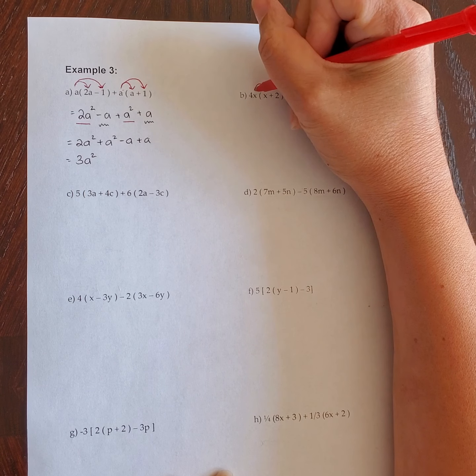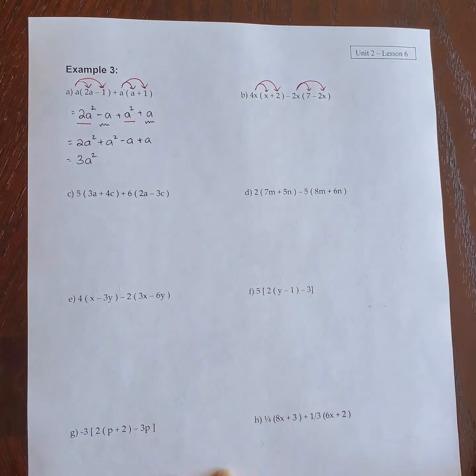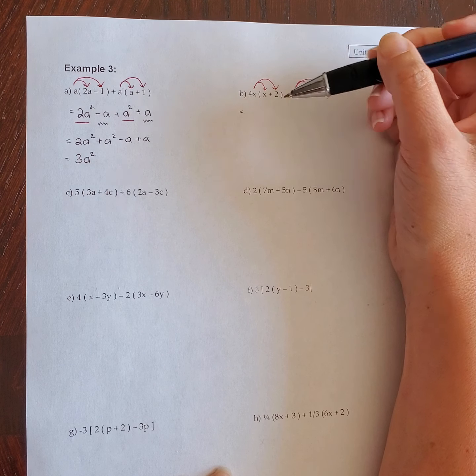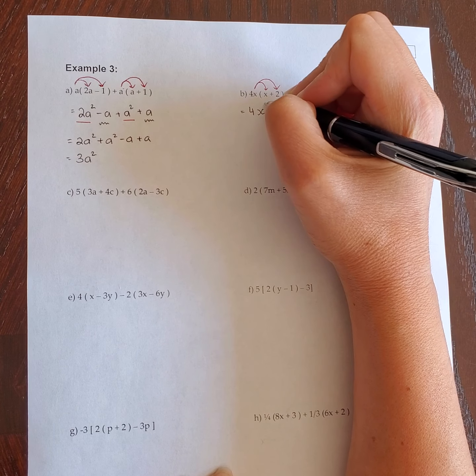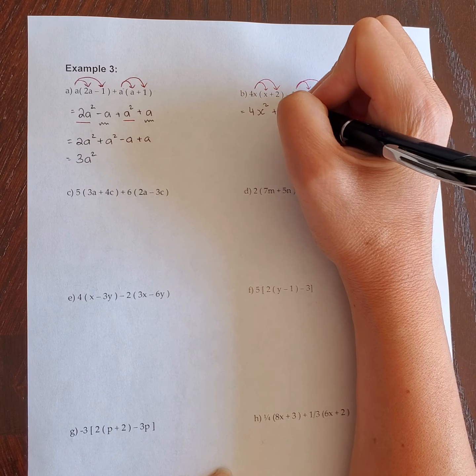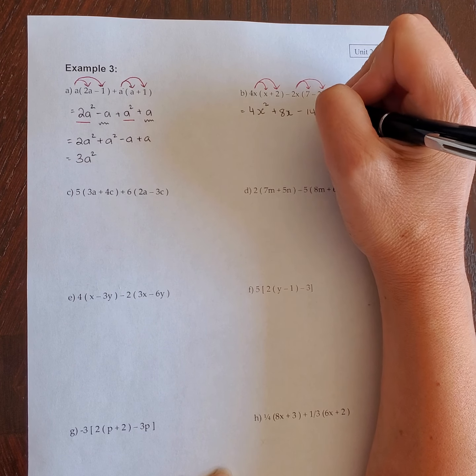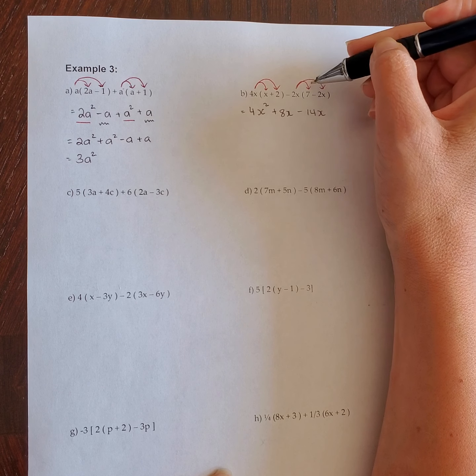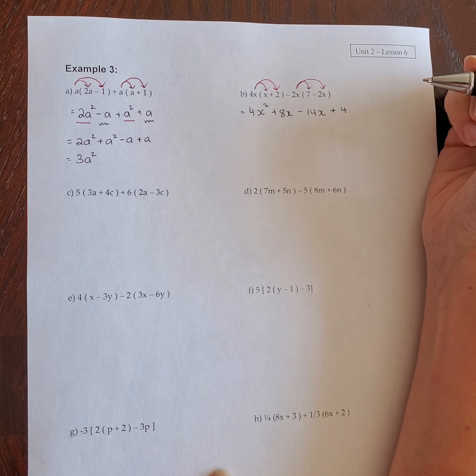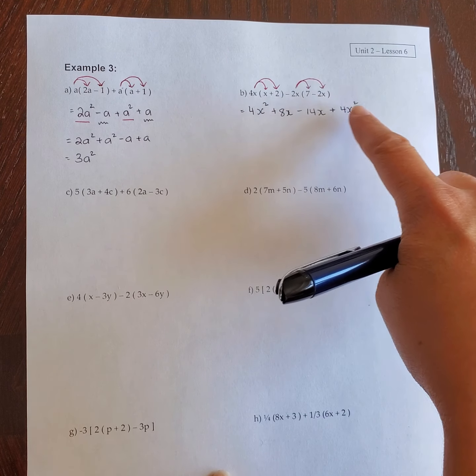Next one, I put in my arrow, so this 4x goes to the first bracket, this negative 2x goes to the second bracket. So 4x times x equals 4x squared. 4x times 2 equals 8x. Negative 2x times 7 is negative 14x, and negative 2x times negative 2x is positive 4x squared. The 2 and the 2 get multiplied to give me 4, and it's positive because a negative times a negative gives you a positive.